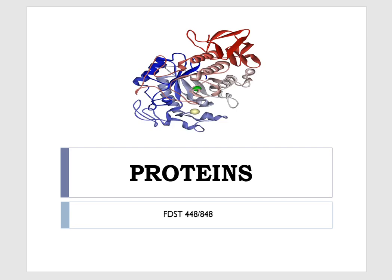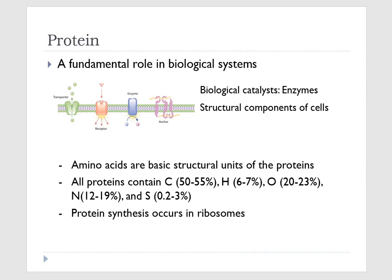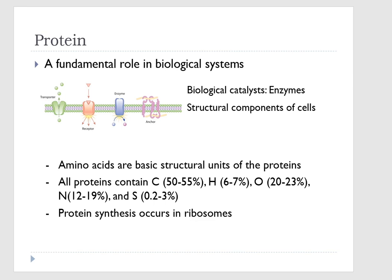We are going to start a new chapter: proteins. Proteins are highly complex polymers, and these polymers are built from monomers called amino acids. At the elemental level, proteins contain carbon, hydrogen, oxygen, nitrogen, and sulfur. Their synthesis occurs in ribosomes.